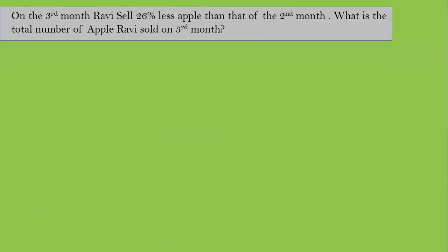Continuing with Ravi's story: on the third month, Ravi sells 26 percent less apples than the second month. In the second month he sold 1150 apples. Pause the video and try to solve it yourself. Given: 26 percent less of 1150. So the fewer apples are 26 by 100 into 1150, which equals 299 apples.